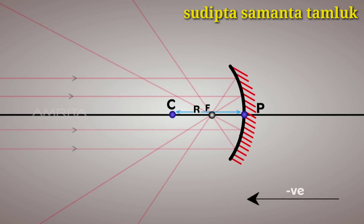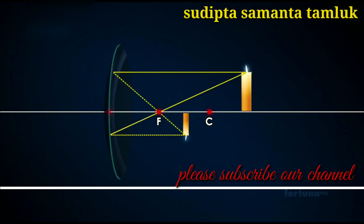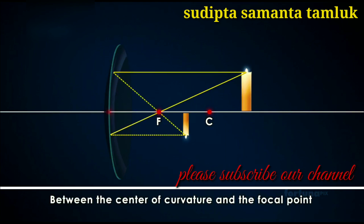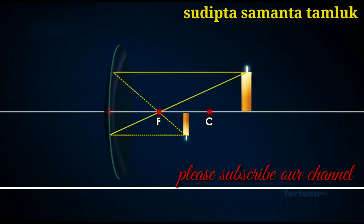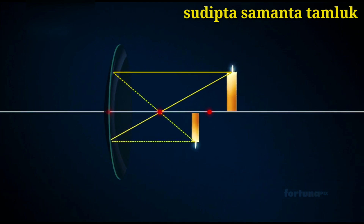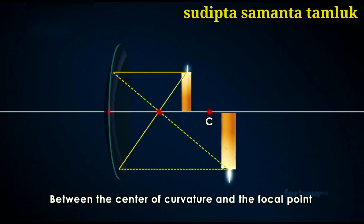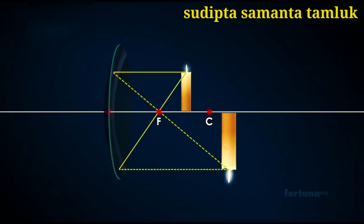If the object is placed beyond the center of curvature C, the image will be formed between the center of curvature and the focal point. In this situation, the image will appear smaller than the object and inverted. If the object is placed at the center of curvature C, the image will also be formed at the center of curvature. Although the image will be the same size as the original object, it will be inverted. If the object is moved toward the mirror between C and the focal point, the image forms outside C and is larger than the object but inverted.